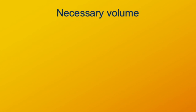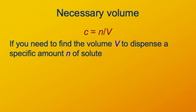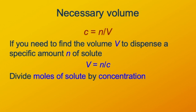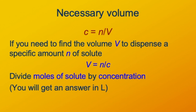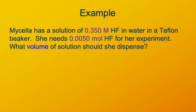We've used this formula to find concentration and to find number of moles. We can also use it to find volume. Solving concentration equals N over V for volume: multiply both sides by V, divide both sides by C, and we get V equals number of moles divided by concentration. This gives an answer in liters, which we might want to convert to milliliters for lab use. Here's our example: Micella has a solution of 0.350 molar HF.